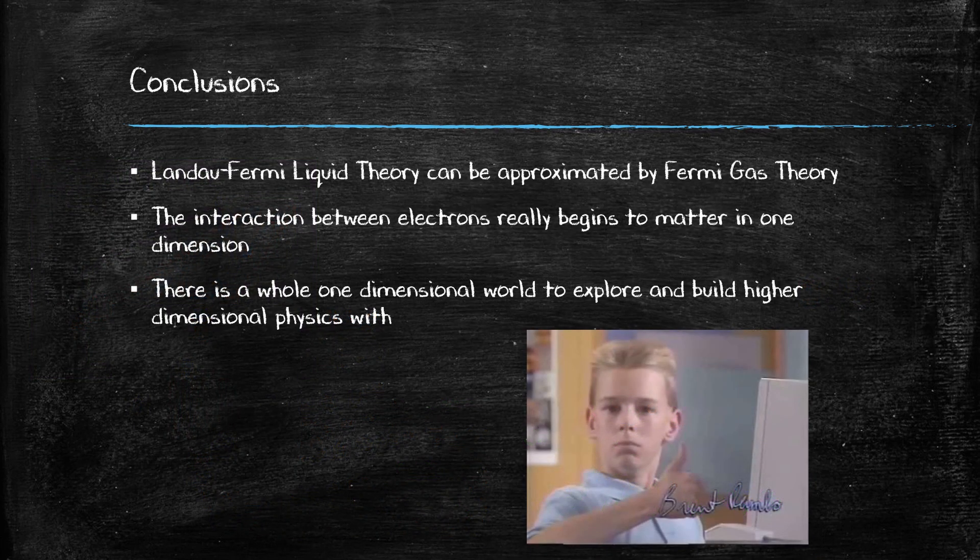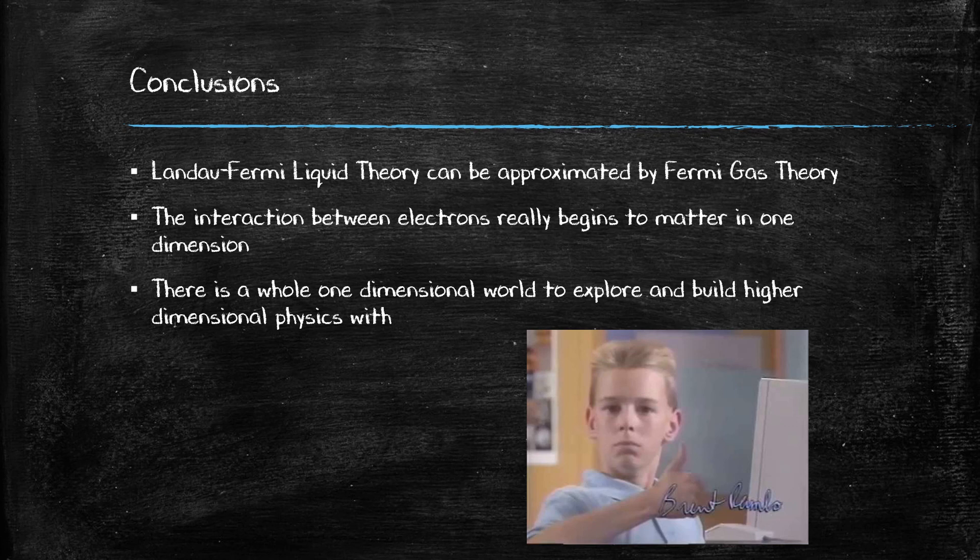After studying all of these theories, we can say a few things. One is that in three or two dimensions, electron-electron interactions can be avoided, and the dependence on the temperature can be seen as the main factor contributing to how we understand conductors or Fermi liquid theory.